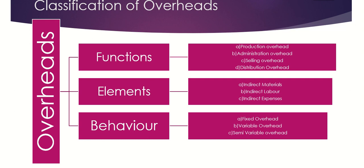Fourth is distribution overhead. It basically comprises all expenditure incurred from the time the product is completed in the factory until it reaches the customer. Whatever expenditure is incurred within that span of time is termed distribution expenses. It includes packing cost, carriage outwards, delivery van cost, and warehousing cost.